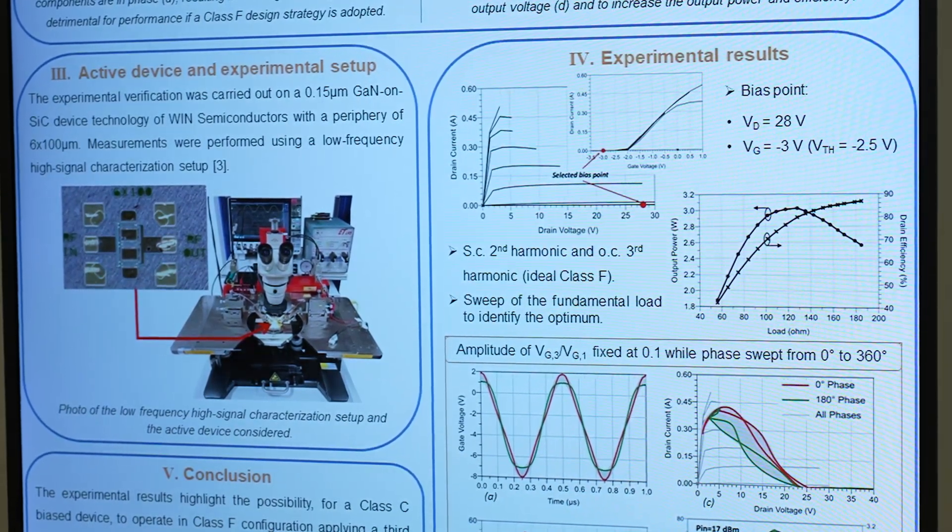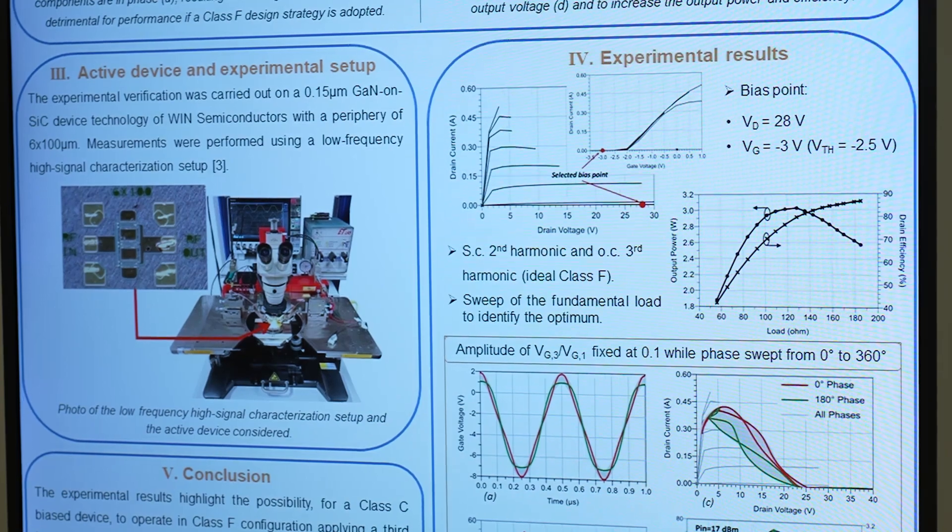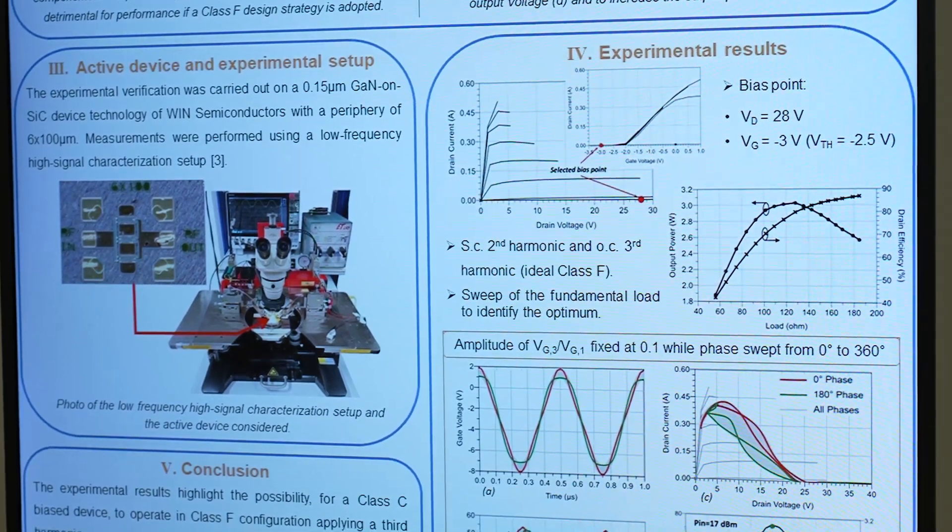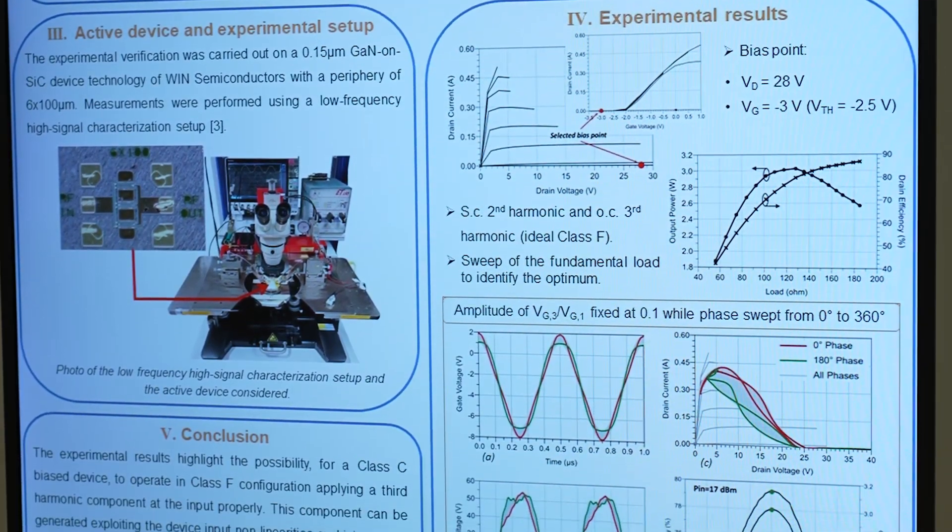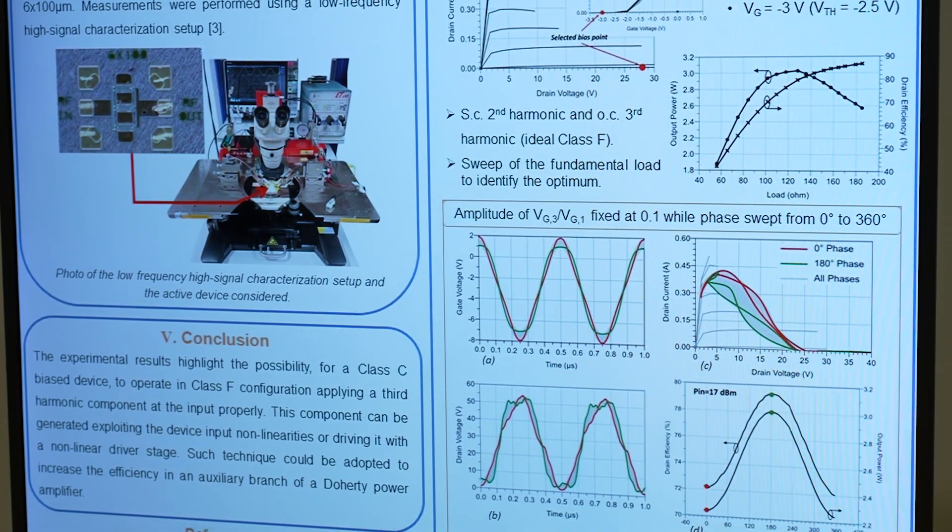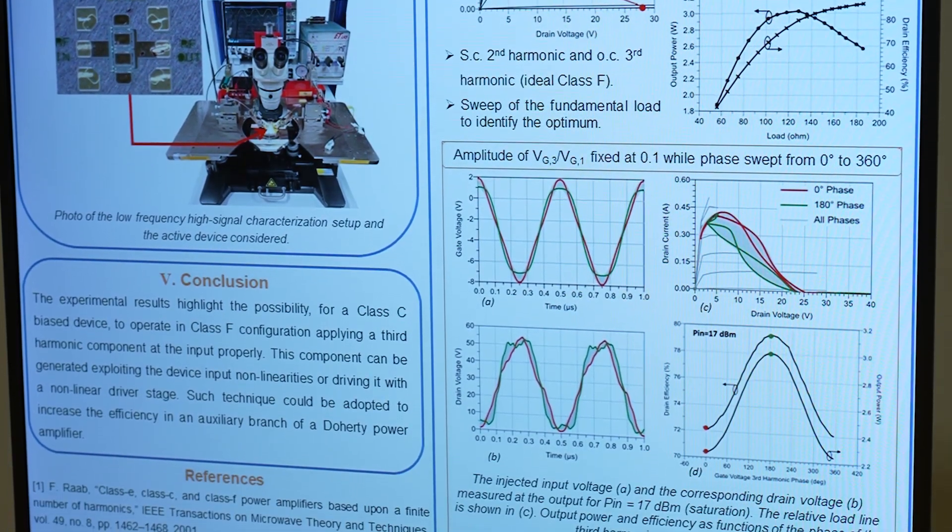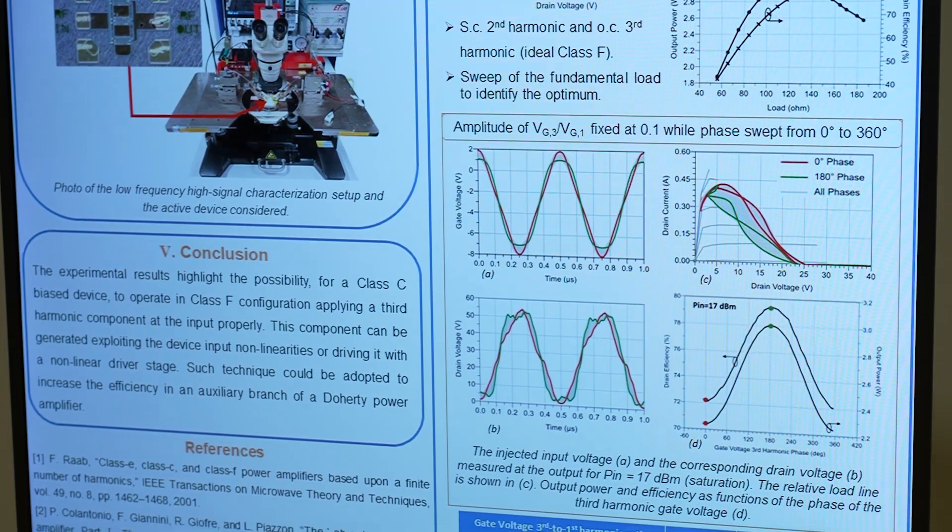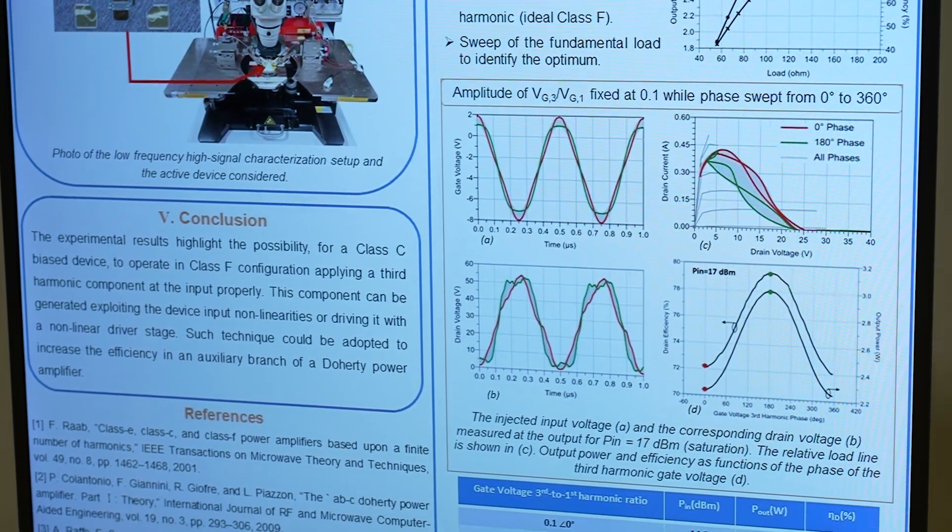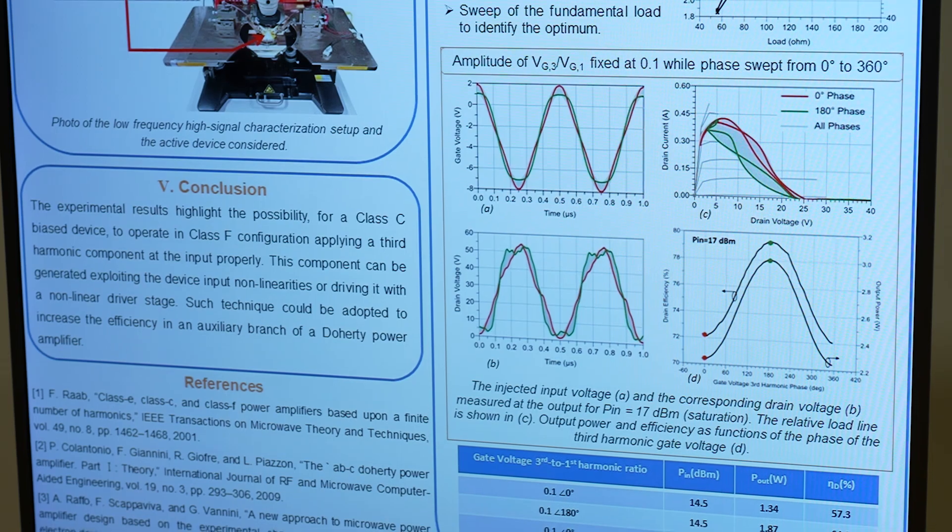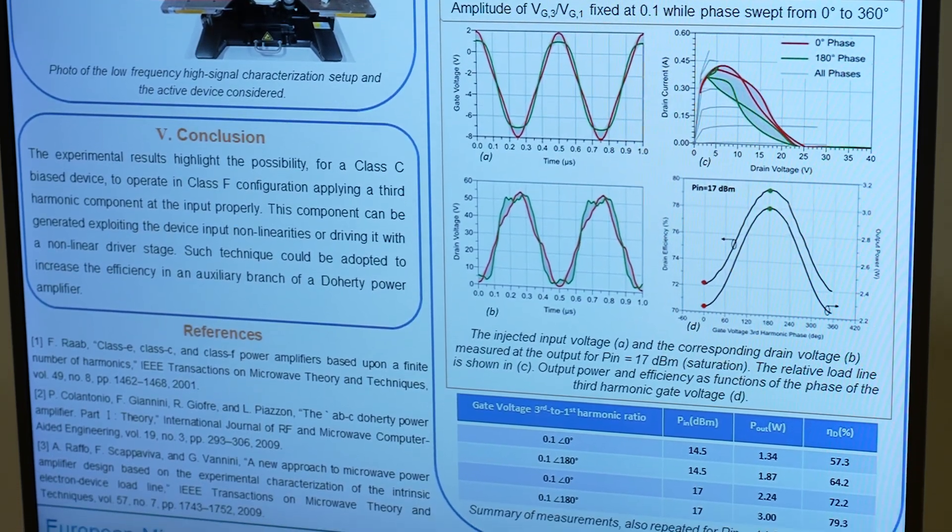So the proposed theory was to inject a third harmonic voltage component in phase opposition with respect to the fundamental one. In this case the phase of the third current component at the output is reversed, so it is possible to square the output voltage waveform and to increase the efficiency and the output power.